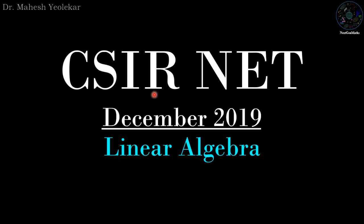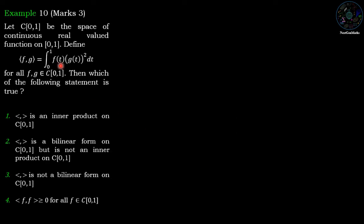Welcome friends. In this video we are going to discuss the problem of CSIR NET December 2019 problem of linear algebra. Let C[0,1] be the space of continuous real-valued functions on [0,1]. Define the product ⟨f,g⟩ equal to the integration from 0 to 1 of f(t)·g(t)² dt, for all f, g belonging to C[0,1]. Then which of the following statements is true?